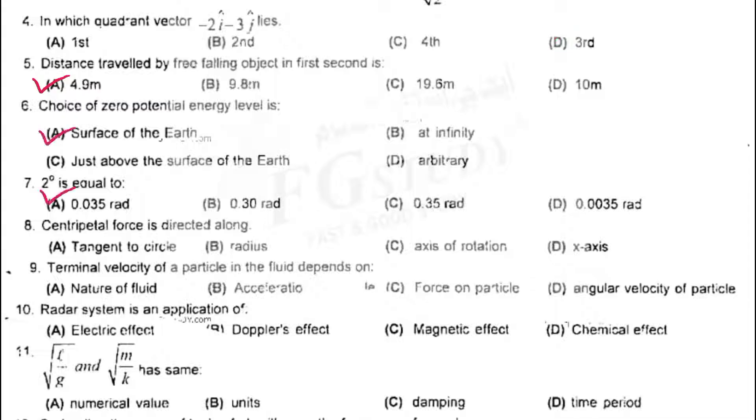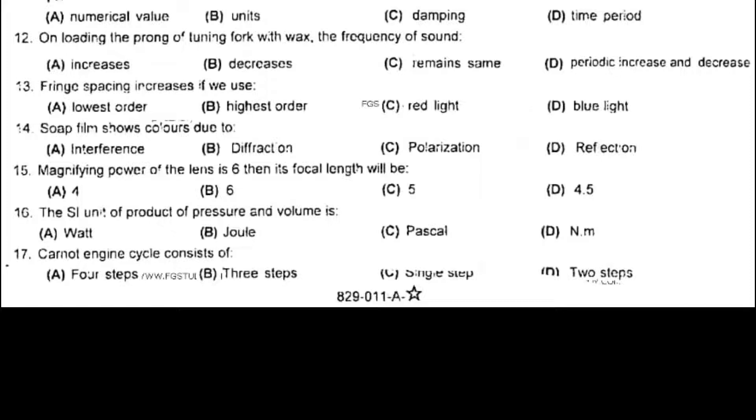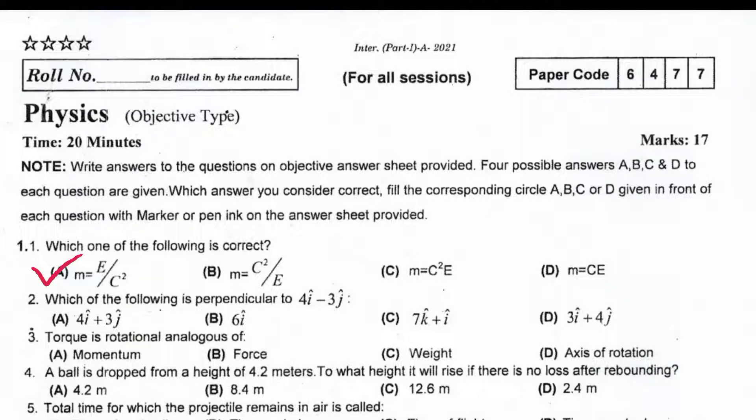Two degrees is equal to 0.035 radian. Centripetal force is directed along radius. Terminal velocity of a particle in the fluid depends on nature of fluid. Radar system is an application of Doppler's effect. √(L/g) and √(m/k) have same units. On loading the prong of tuning fork with wax, the frequency of sound decreases. Fringe spacing increases if we use red light. Soap film shows color due to interference. Magnifying power of the lens is 6, then its focal length will be 5 cm. The SI unit of product of pressure and volume is newton meter. Carnot energy cycle consists of 4 steps. Which one of the following is correct? m = E/c².